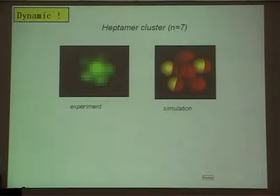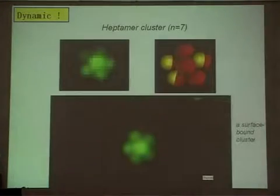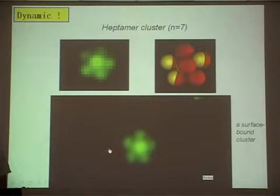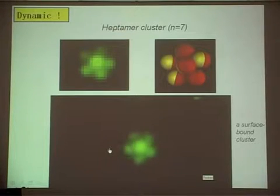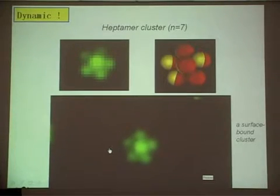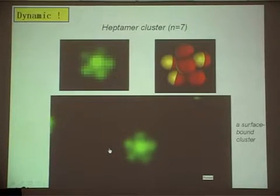The simulations were precise while our images were fuzzy. But in experiments, we had time — movies. Here is an example of beautiful images from movies: a flower-like structure, a seven-membered cluster. You can see how stable the cluster is. There is a seventh particle buried underneath the field of view, adsorbed to the bottom of the sample cell. The cluster simply rotates by Brownian motion. We call this the flower structure.